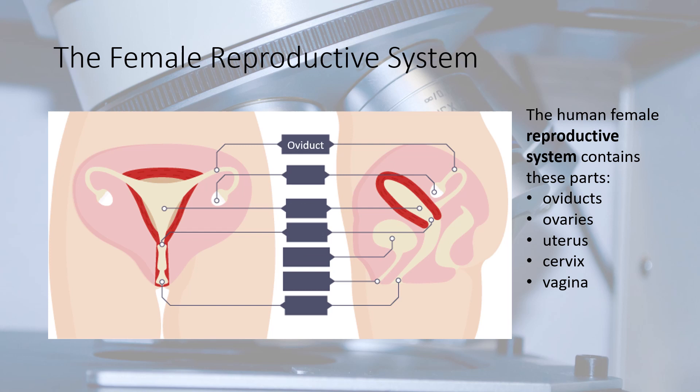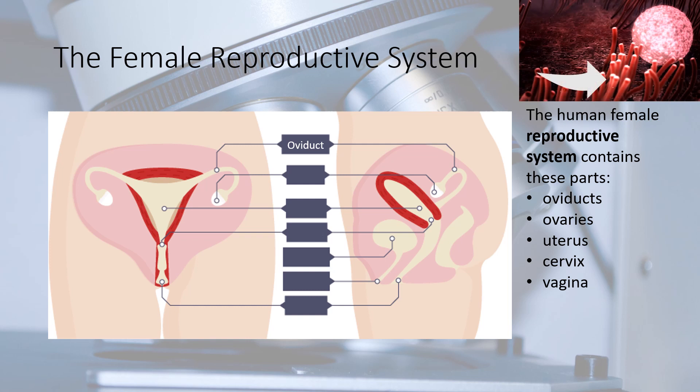Each ovary is connected to the uterus by an oviduct, sometimes called a fallopian tube or egg tube. The oviduct is lined with cilia, which are tiny hairs on cells. Every month an egg develops, becomes mature, and is released from an ovary. The cilia move the egg along inside the oviduct and into the uterus.